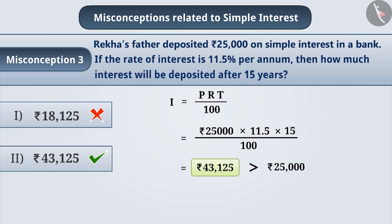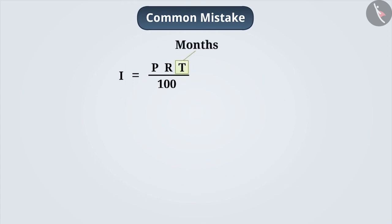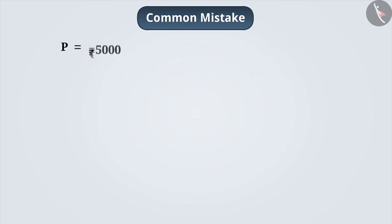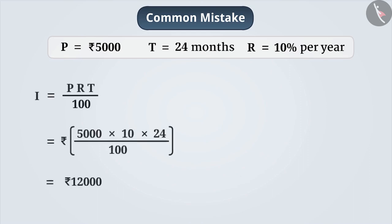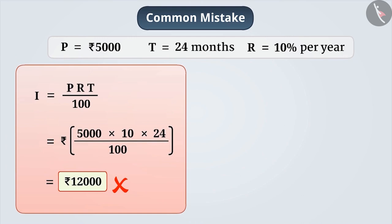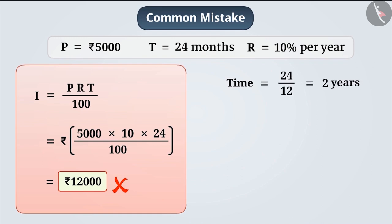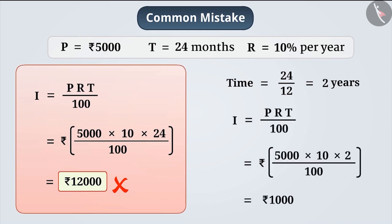Along with these misconceptions, students commit a common mistake. While calculating simple interest, students either forget to convert time given in months into years or ignore it, leading to incorrect simple interest. For example, if P = Rs. 5000, T = 24 months, and R = 10% per year, they do not convert time from months to years. Since interest is represented per year, it is necessary to convert time. Here, we convert 24 months into 2 years by dividing by 12, giving Rs. 1000 as the correct simple interest.